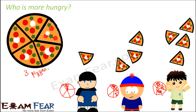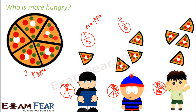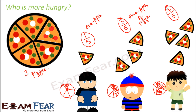Now can you tell me what fraction of pizza did each one of them eat? The first boy ate 1 slice out of 5 slices, so he ate 1 fifth of the pizza. The second boy ate 3 slices out of 5 slices — this is called 3 fifth, so he ate 3 fifth of the pizza. The third one ate 4 slices out of 5 slices — this is called 4 fifth of the pizza. So 1 fifth, 3 fifth, 4 fifth are all fractions, telling you how much of the total.